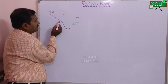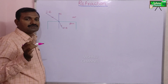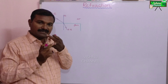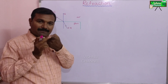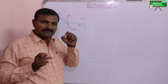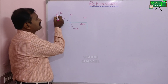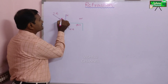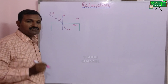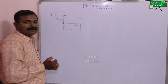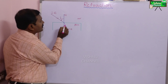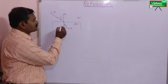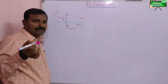The angle of incidence is the angle between the incident ray and the normal line, and is denoted by i. The angle of refraction is the angle between the refracted ray and the normal line, and is denoted by r.